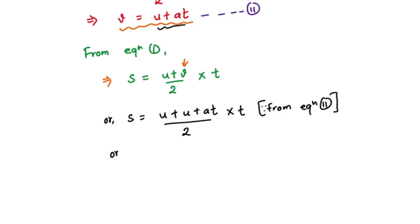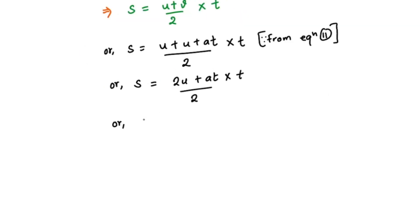Now we are just going to solve this and we'll get our equation. So we have s = (u + u + at)/2 × t, which is (2u + at)/2 × t. Or we have s equals, now we are going to multiply this with our time, so we have 2ut + at² divided by 2.